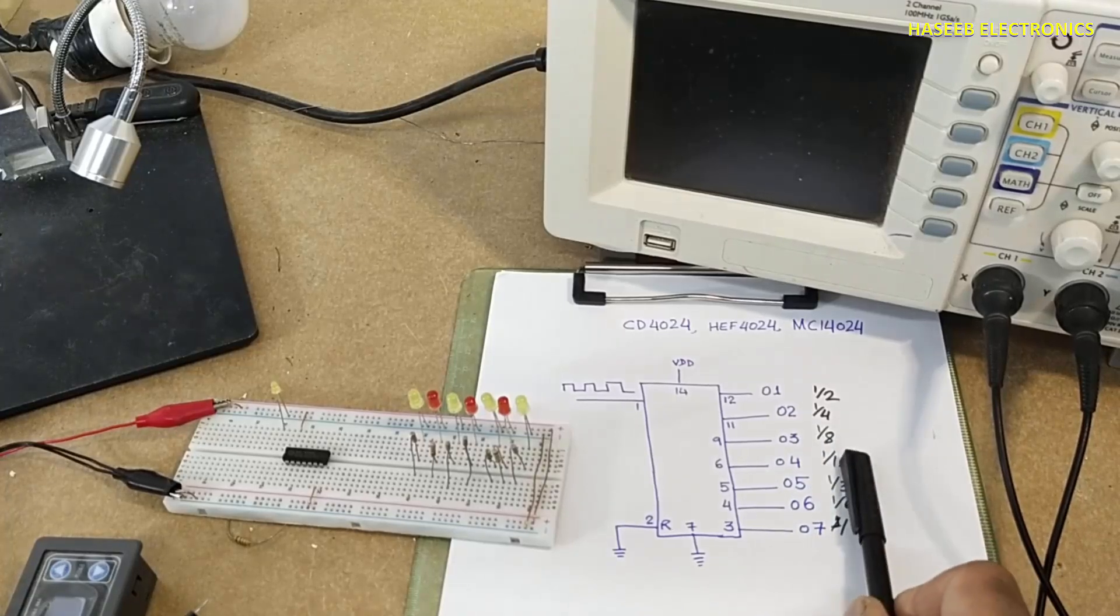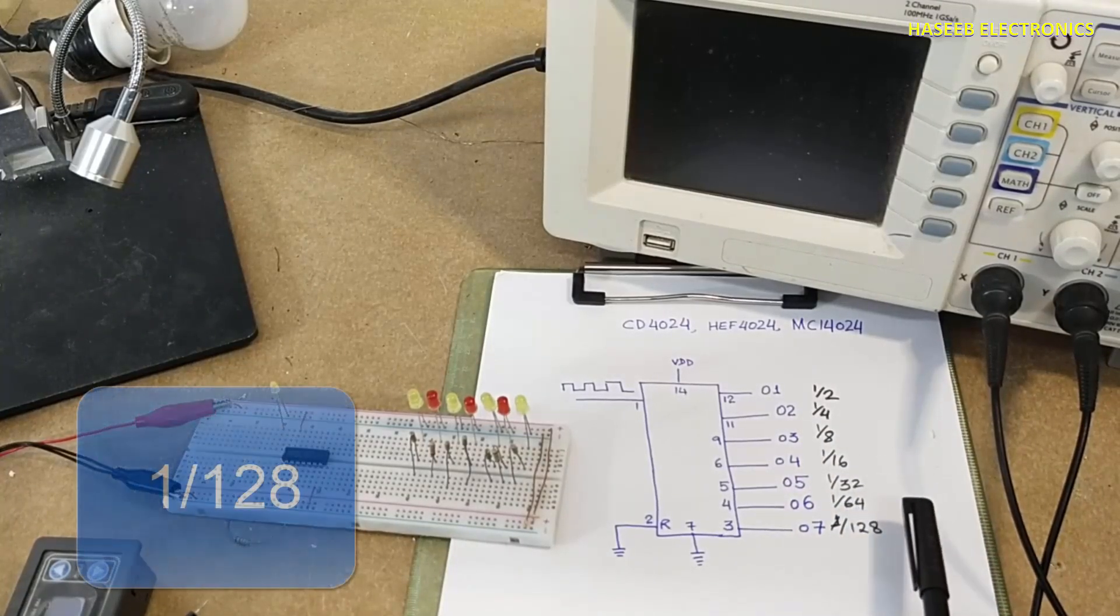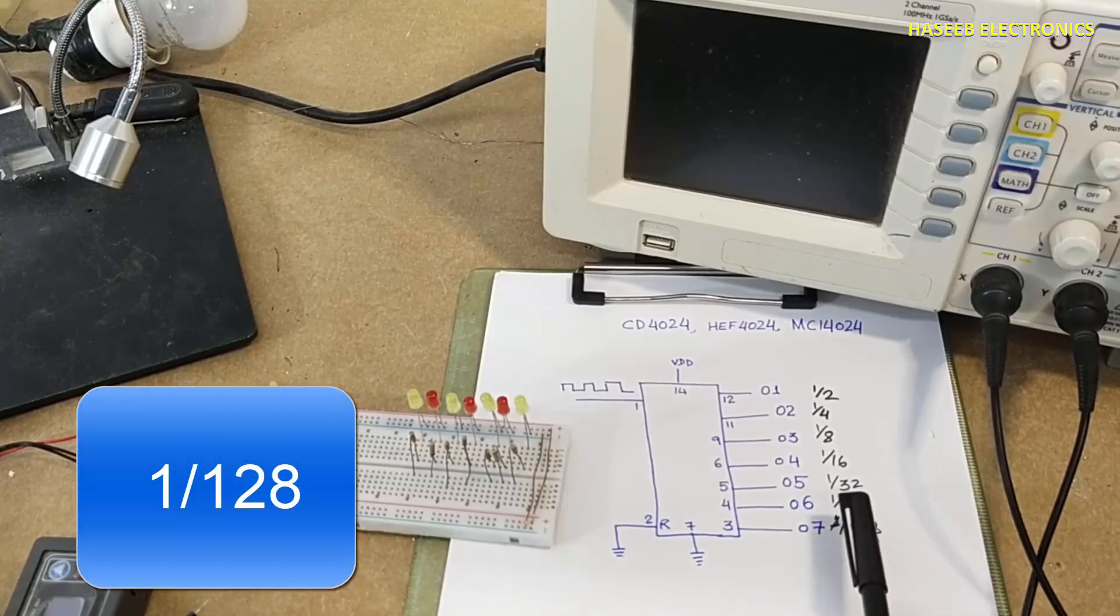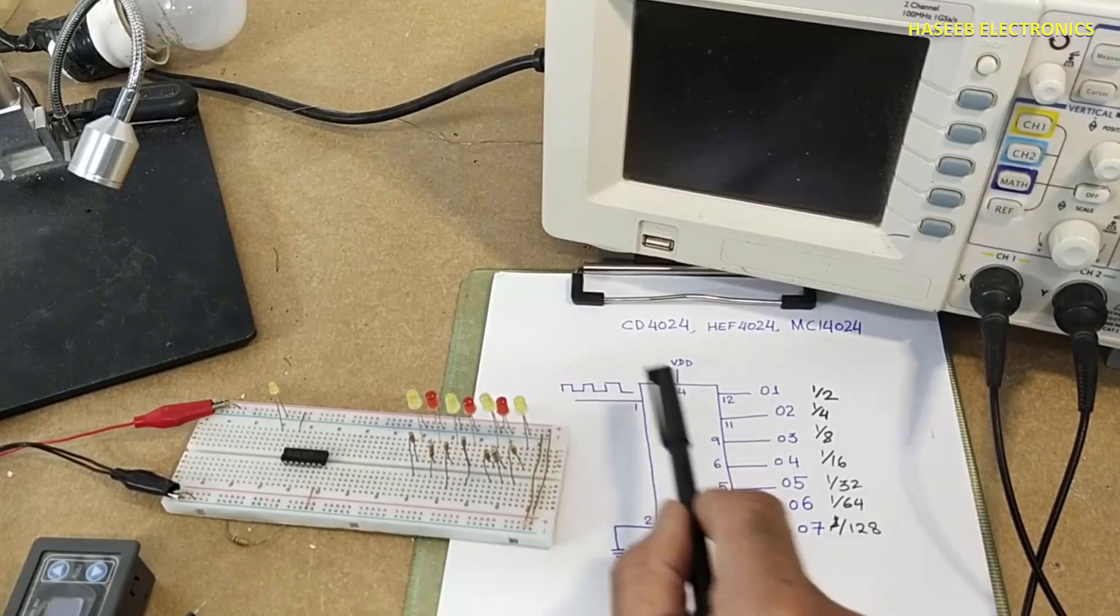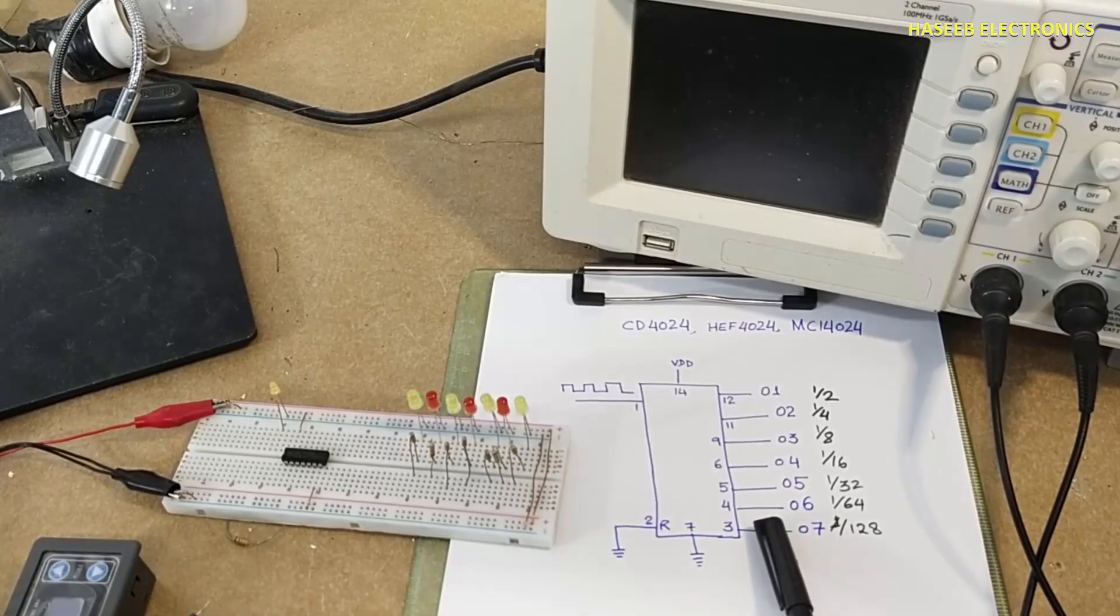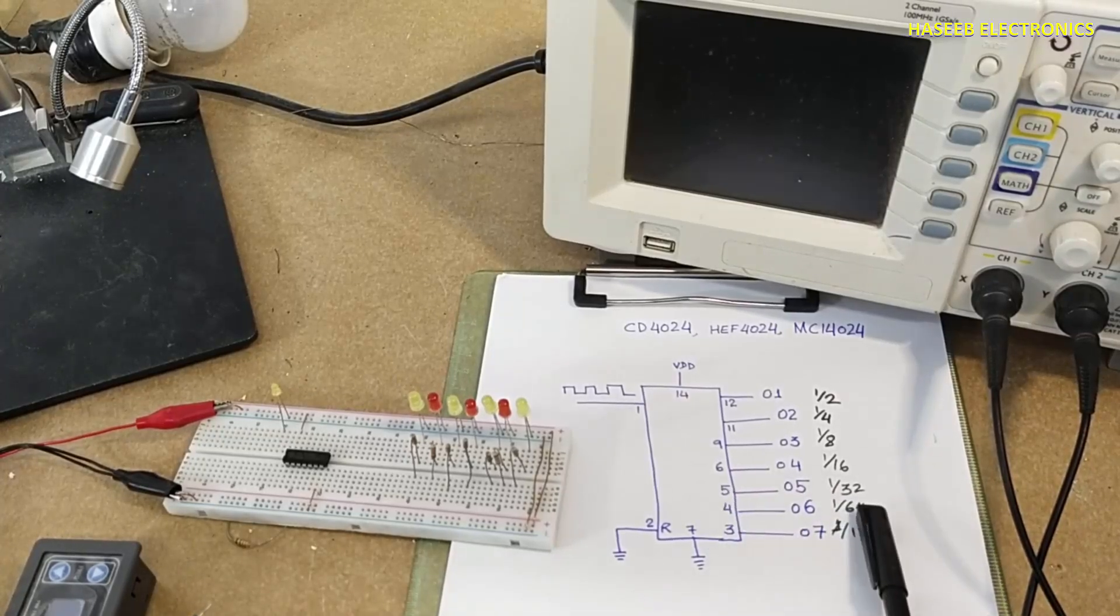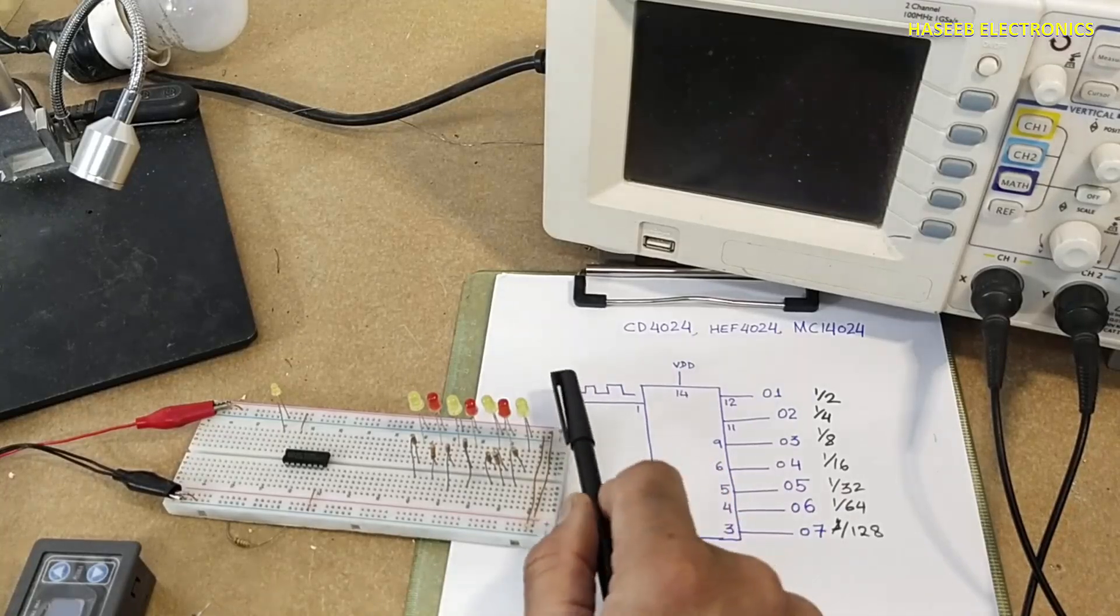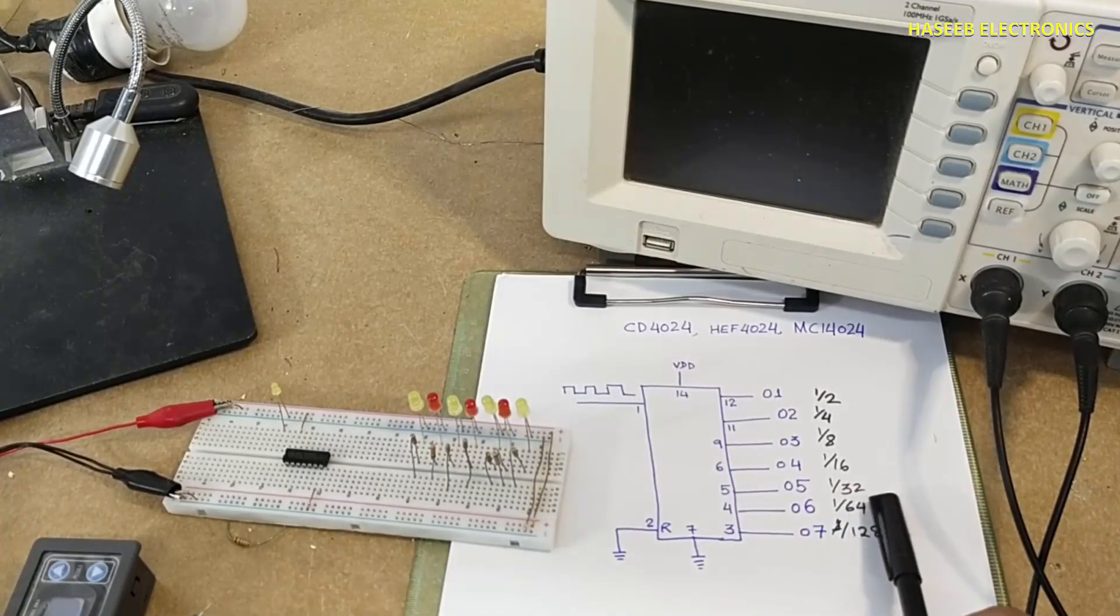Then 1 over 8, 1 over 16, 1 over 32, 1 over 64, and 1 over 128. That means the frequency here will be divided by 128 if we take output from this pin. At output number 6, it will divide by 64. If we are providing 64 hertz here, we will receive 1 hertz at this point.